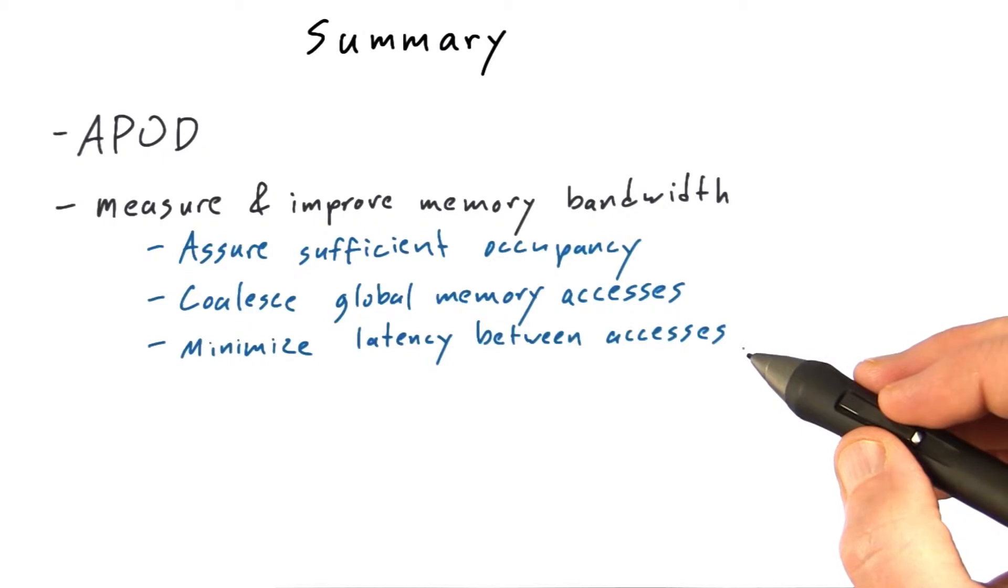And so, for example, we saw that in one case, we spent too much time waiting at barriers. By reducing the number of threads in a block, we were able to reduce the average time spent waiting at a barrier and help saturate that global memory bandwidth.